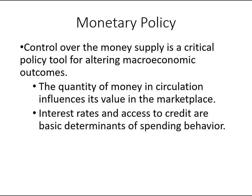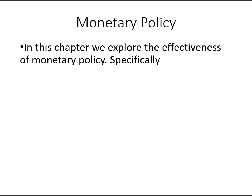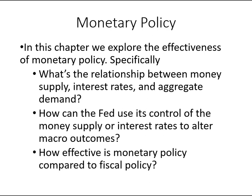Changing the value of money indirectly affects the interest rate, which will in turn affect aggregate demand. In this chapter, we will explore three aspects: first, what is the relationship between money supply, interest rate, and aggregate demand? Second, how can the Fed use its control of the money supply or interest rate to alter macroeconomic outcomes? And third, how effective is monetary policy compared to fiscal policy?